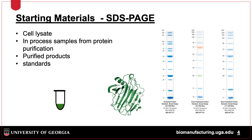Samples typically run on SDS-PAGE gels would include whole cell lysates. These samples need to be either clarified to remove insoluble proteins, or the insoluble proteins can be run separately. Purified proteins can be assessed for total purity using ImageJ, or in processed samples run to gauge the effectiveness of a purification step. In addition, a range of standards can be run — these are mixtures of purified proteins of known size and concentration used to estimate size and relative concentration, keeping in mind differences in extinction coefficients.